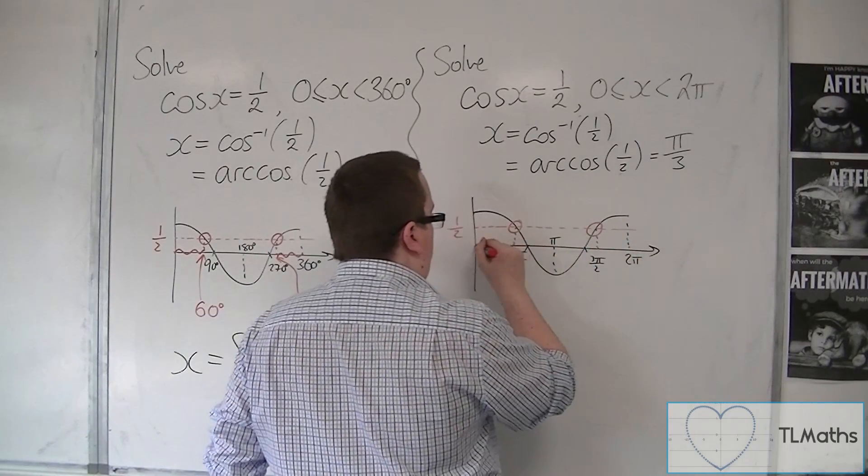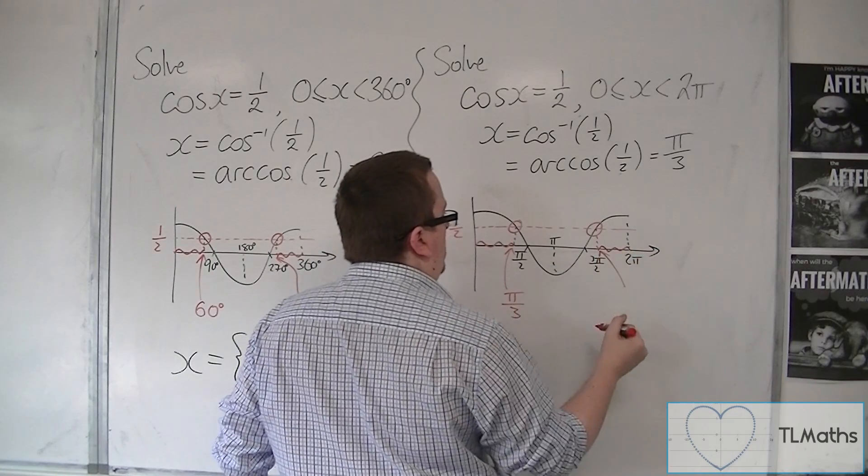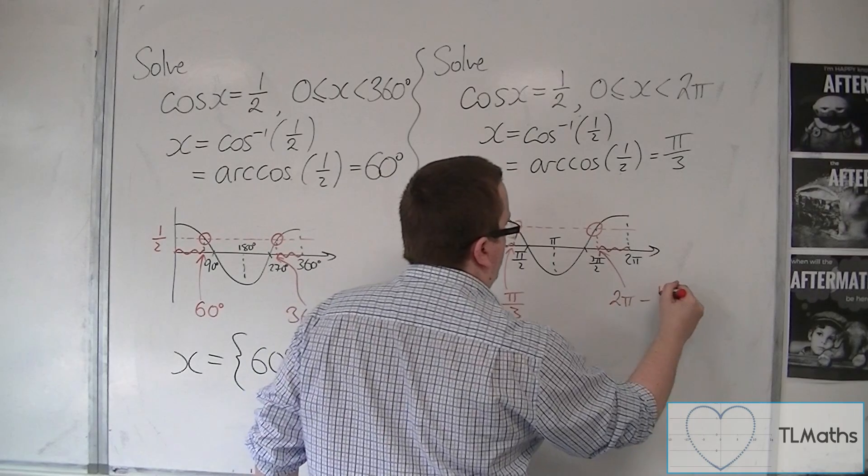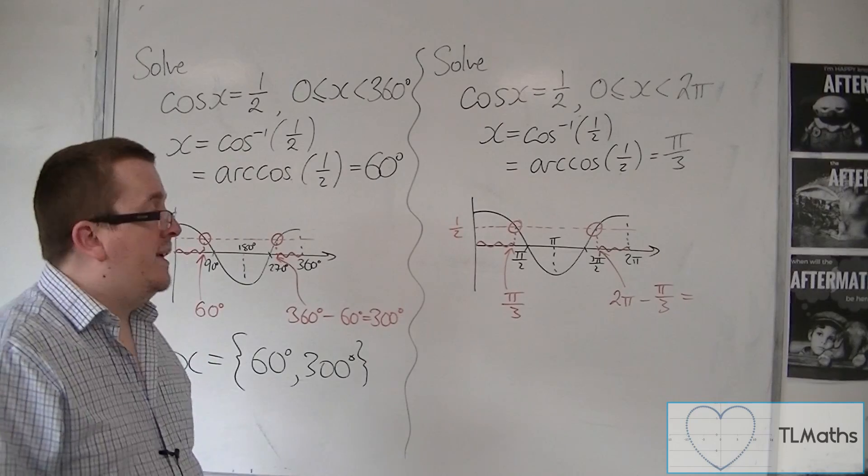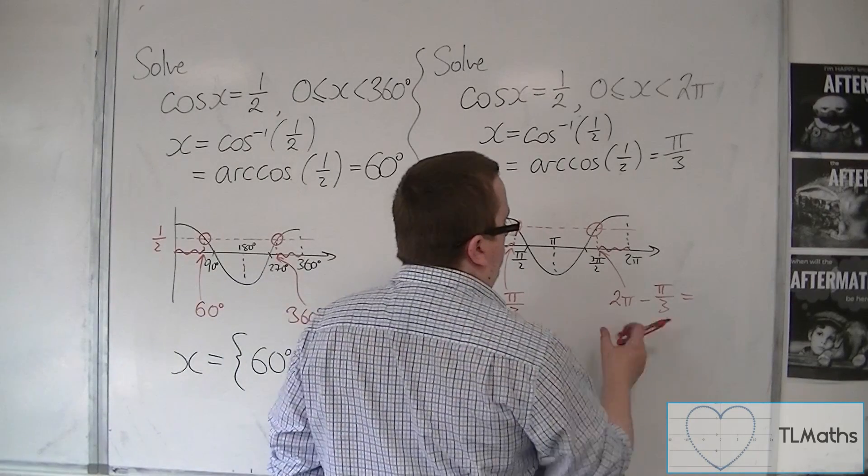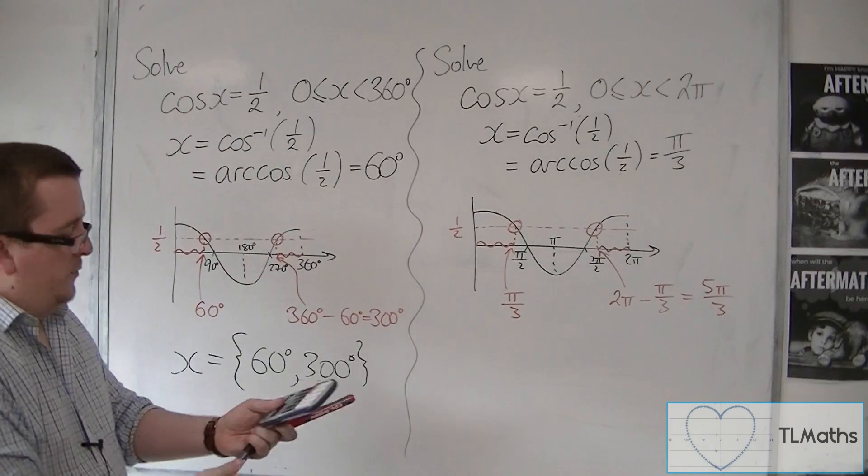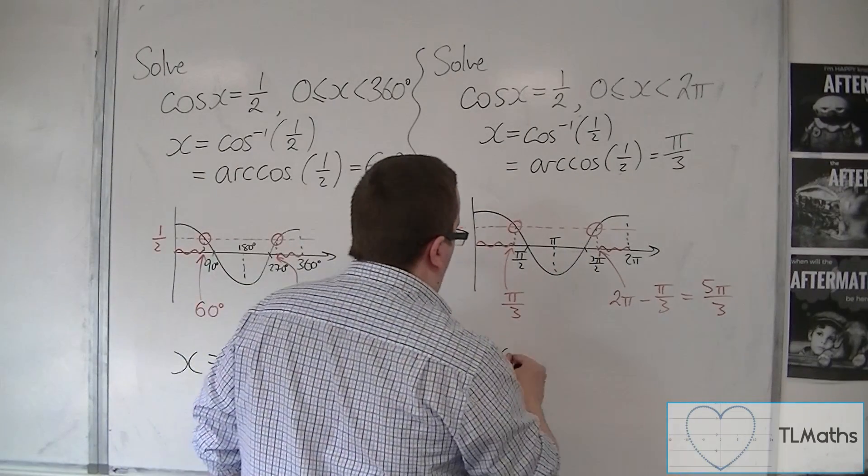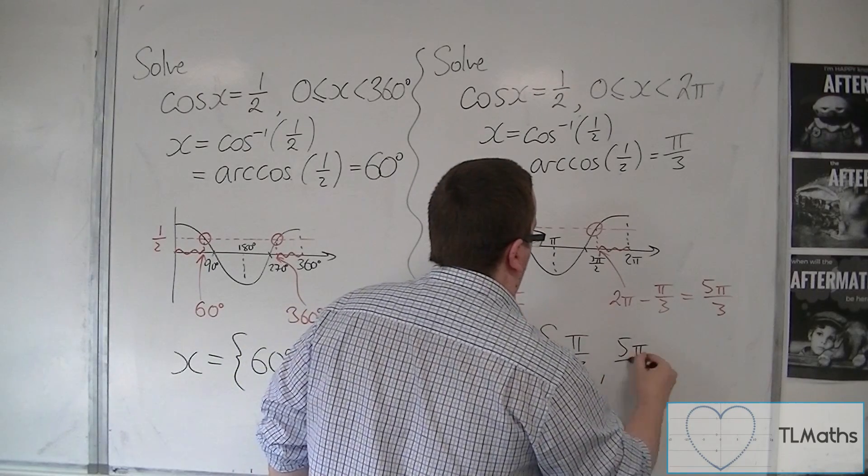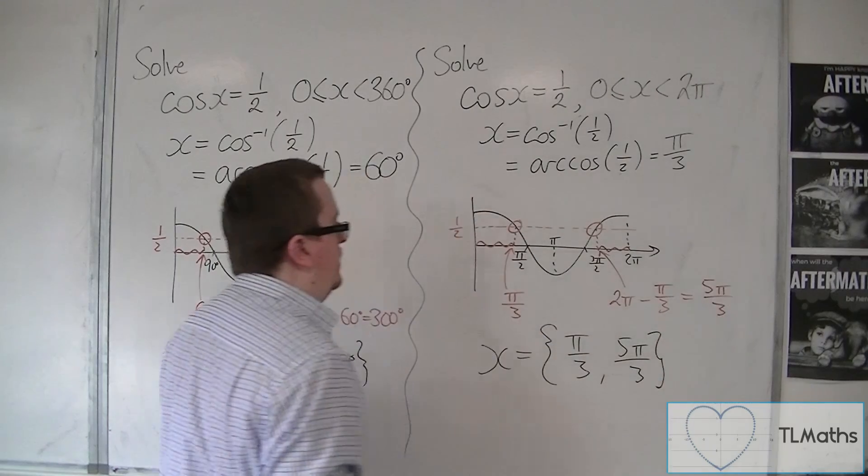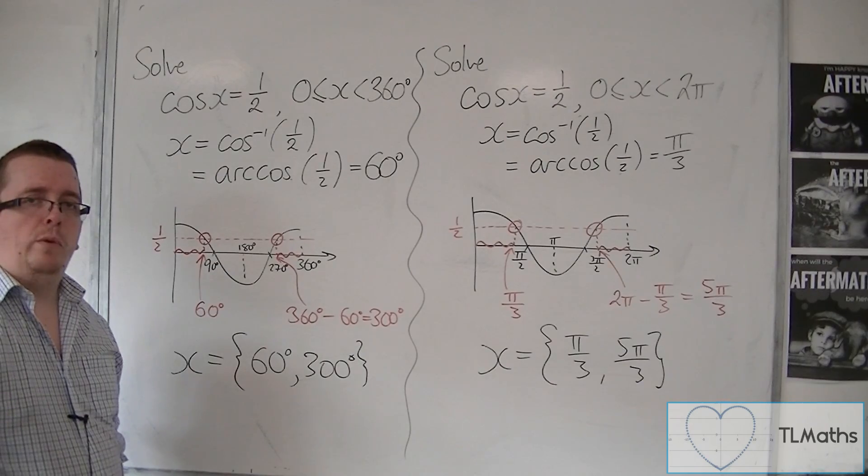This one, if this distance is the same as that distance, then this point can be found by doing 2 pi take away pi over 3. Now you can do that in your calculator, or you can recognize that's 5 pi over 3. And so we have 2 solutions in radians, pi over 3 and 5 pi over 3. And that's how working in degrees and radians differ for this problem.